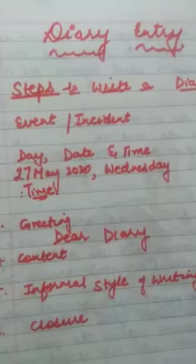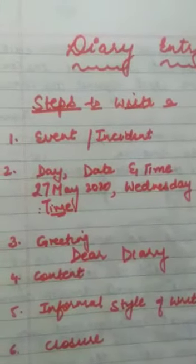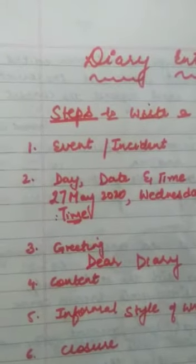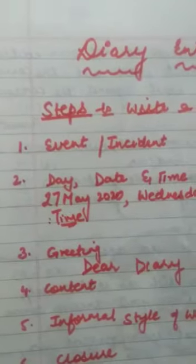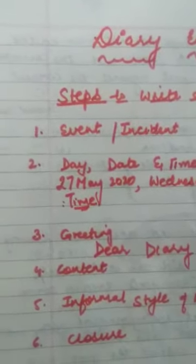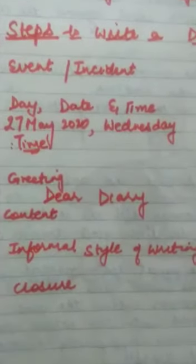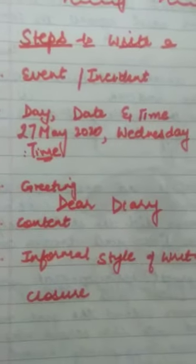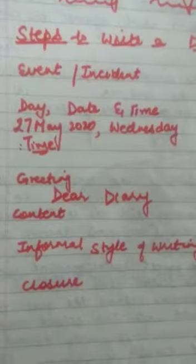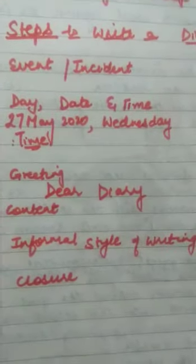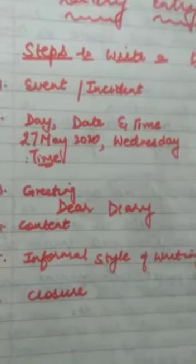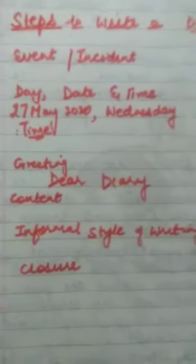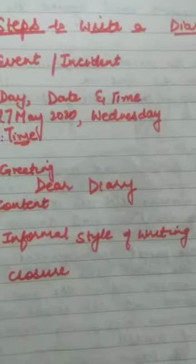Then you write the content. Make sure all the important details are there in the main content of the entry. Stress on your feelings, the emotions, and reactions rather than on the event itself. Since this is an informal style of writing, the diary is written to express your innermost feelings about people, events, and places. Consider the diary to be your best friend with whom you can share your deepest thoughts, feelings, emotions, and desires — confiding everything into your diary. Please follow the informal style of writing.